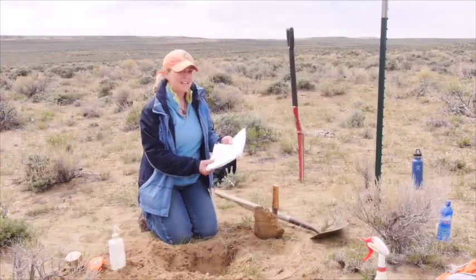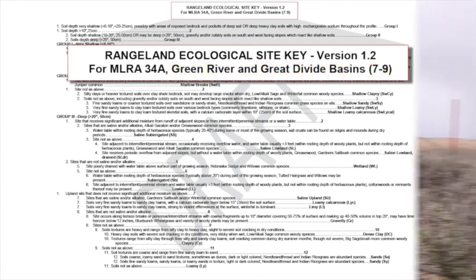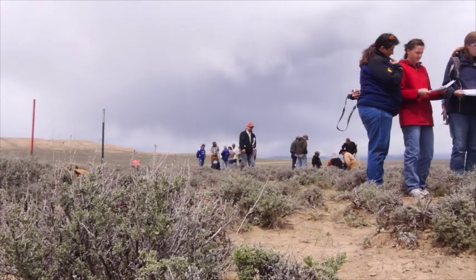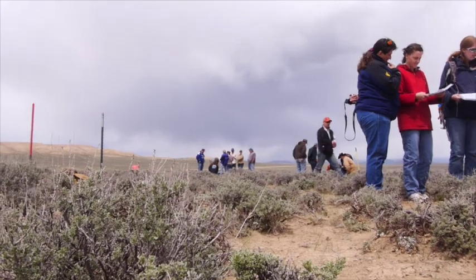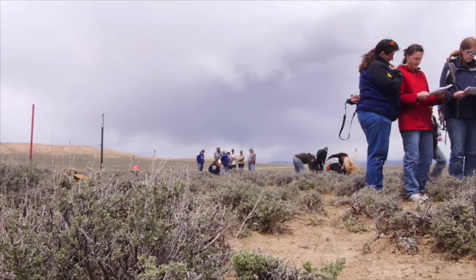The key we're using is Major Land Resource Area 34A, which is the Cool Central Desert Basins and Plateaus. This is the Green River Great Divide Basin Key. We're in a 7 to 9 inch precipitation zone, and this is the key that fits all of the land surrounding us.